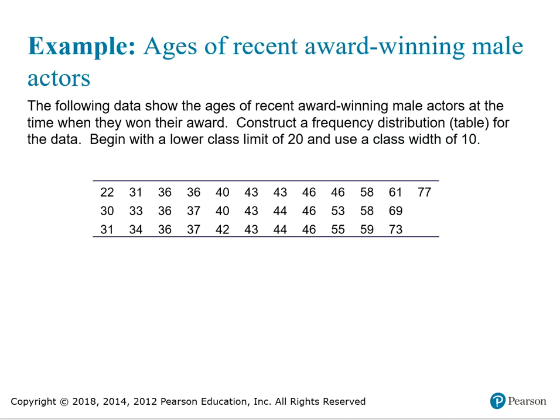Now let's try an example from scratch. The data is in order from smallest to biggest — these are the ages of recent award-winning male actors at the time they won their award. We want to construct a frequency distribution table for this data. We're given instructions to begin with a lower class limit of 20 and use a class width of 10. I'll draw the table with ages of actors and the frequency of occurrence in each age group.